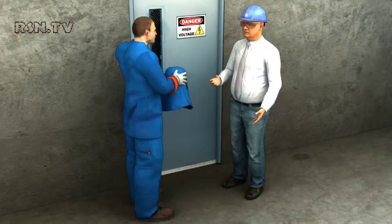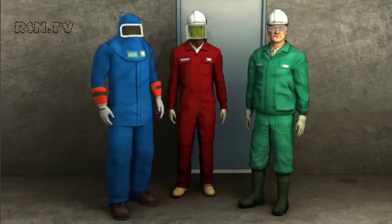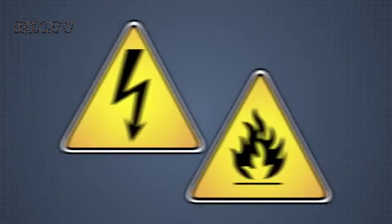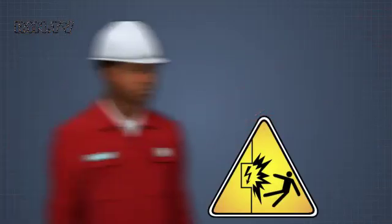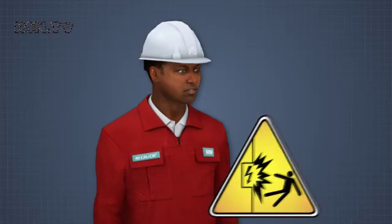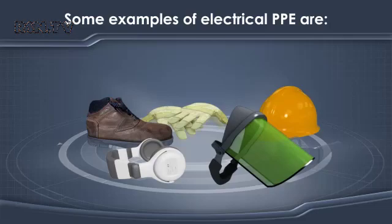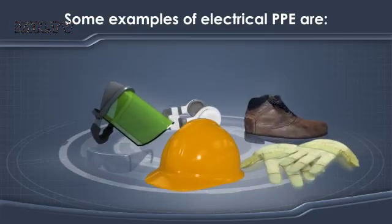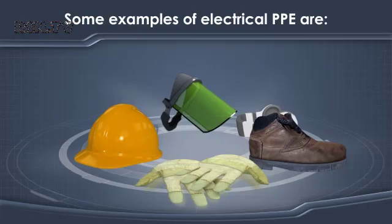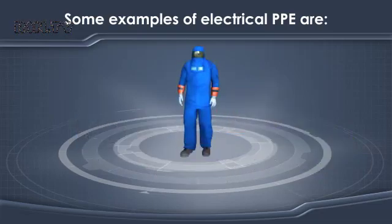Employers are responsible for choosing the PPE for a specific task and for teaching workers how to use it. There are many types of PPE used to protect against the hazards presented by electrical equipment. PPE designed to protect you from electrical and flame hazards may not be made to withstand arc flash hazards — if there is an arc flash hazard, the PPE must be ARC rated. Some examples of electrical PPE are an ARC rated face shield, safety glasses, a voltage rated hard hat, leather gloves, insulated leather shoes or boots, hearing protection, and a full ARC flash suit.